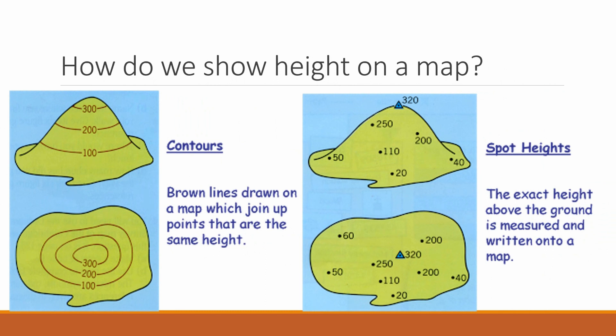On ordnance survey maps, you can see height represented in two different ways. Contour lines, which are the diagrams you can see on the left. These are normally brown lines that are drawn on a map, where they circle a certain area, and each line indicates a certain height that it has above sea level. And on the right-hand side of the map, you can see the second way. It's the spot height. This indicates the exact height that the ground has above sea level on that exact point. And it's normally represented by a dot with a number next to it, or sometimes it's represented by a triangle with a dot in it as well.